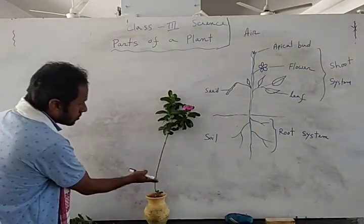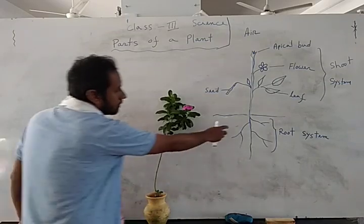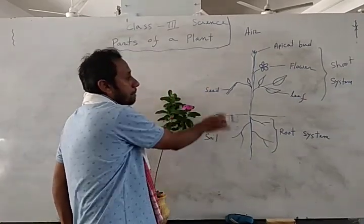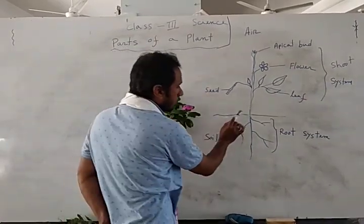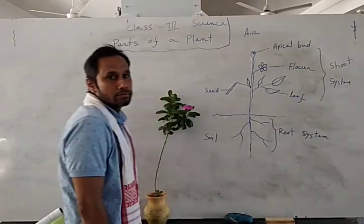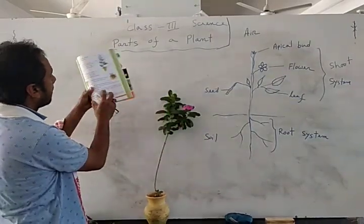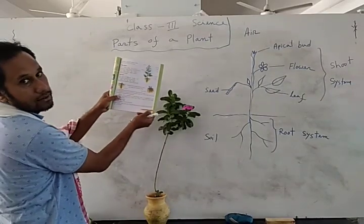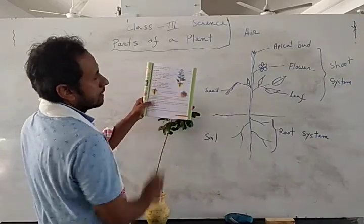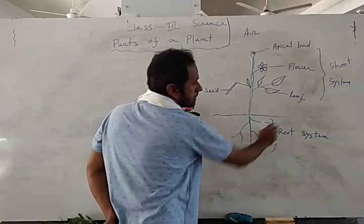This portion is above the ground, and this portion is under the soil. We first divide the plant in two parts. Look at the picture — the part that grows under the soil is called the root system. You can open page number 49 to see a complete plant drawn there.